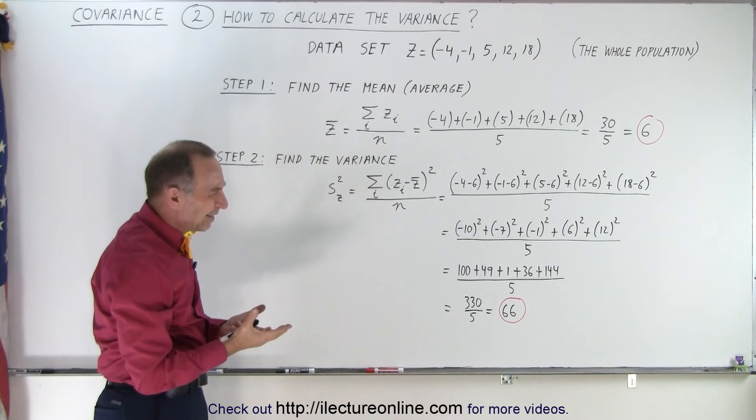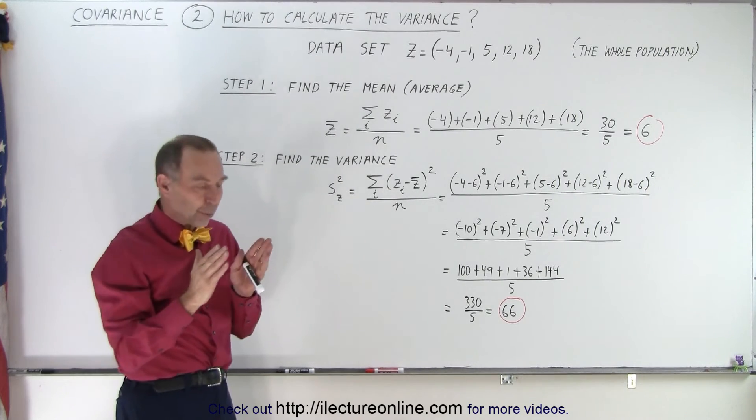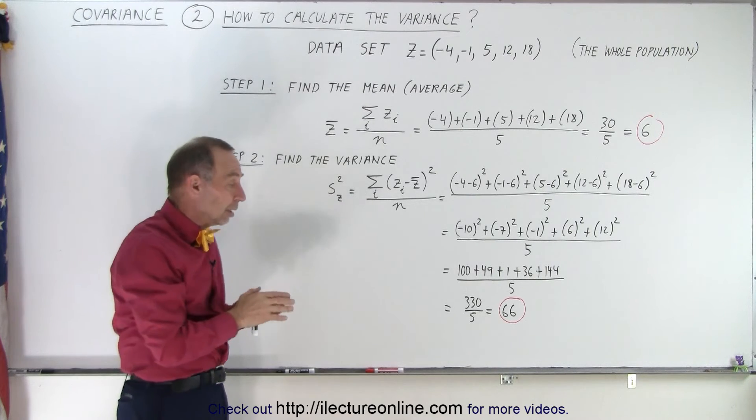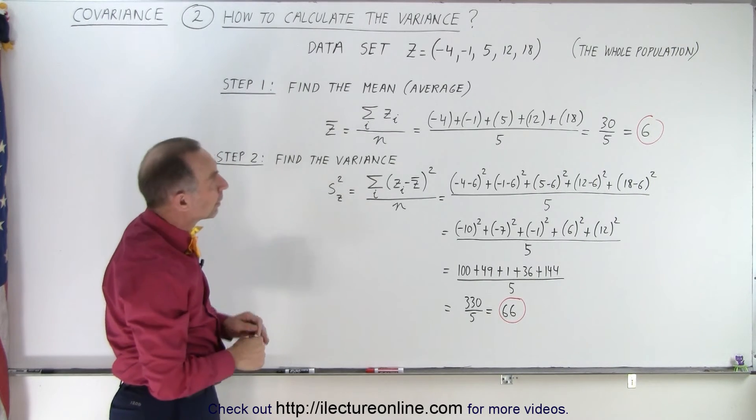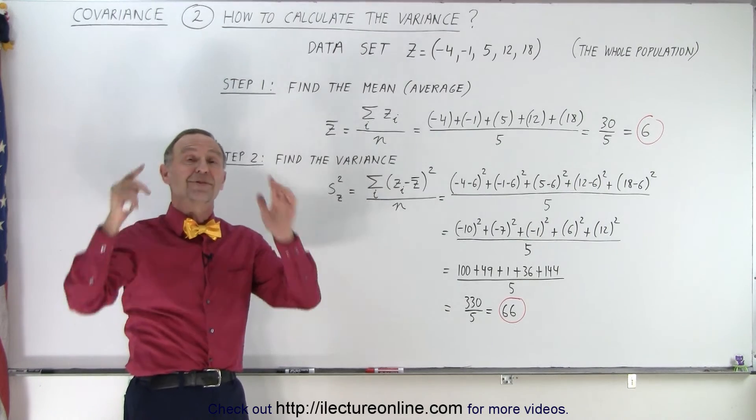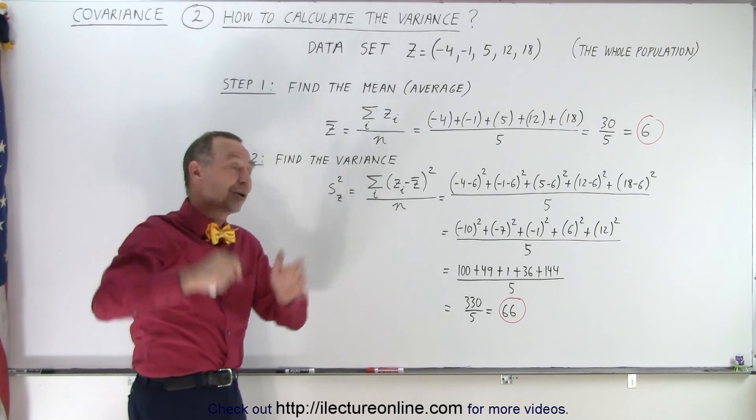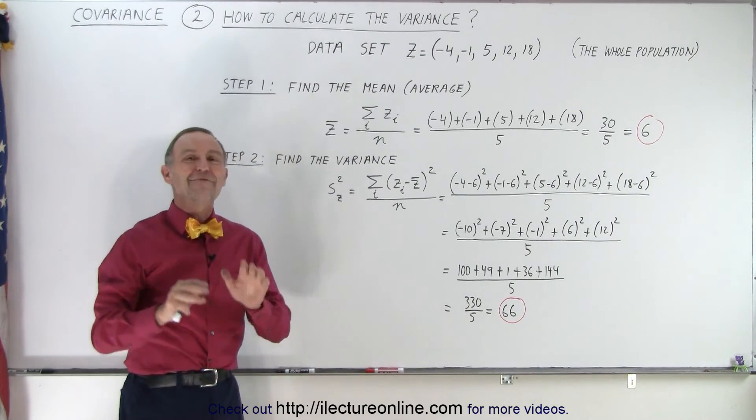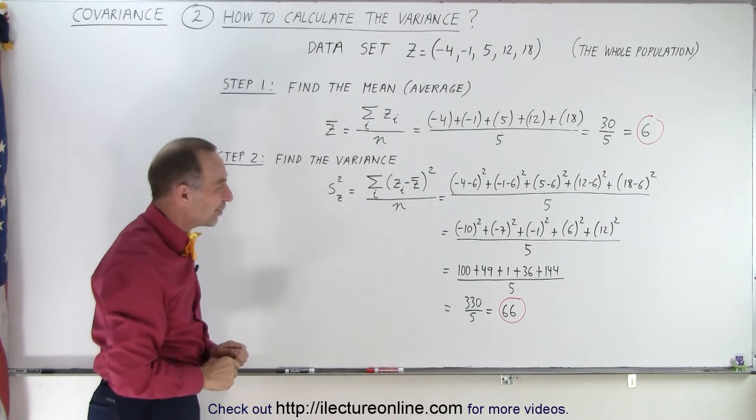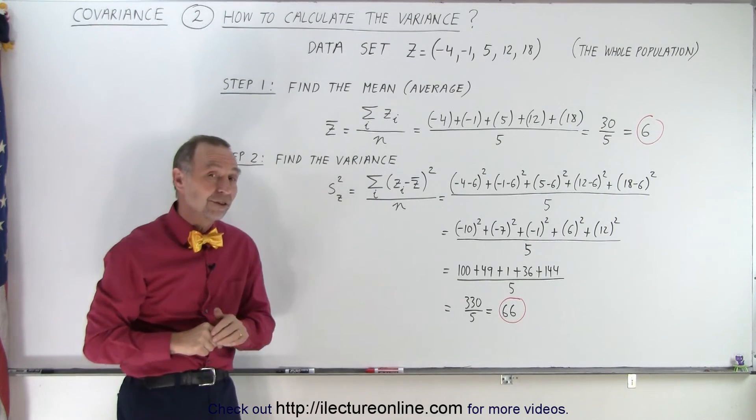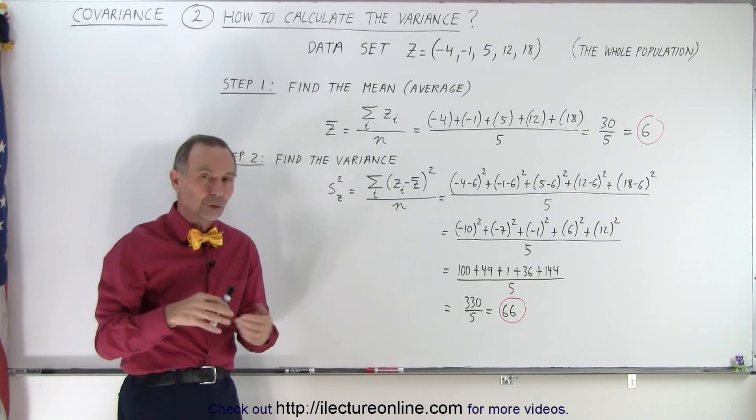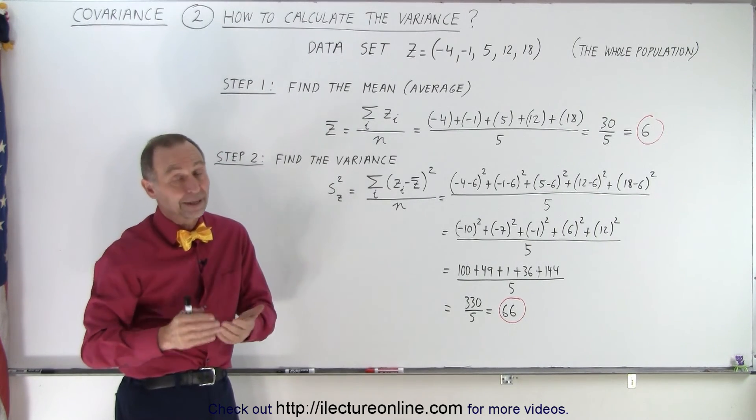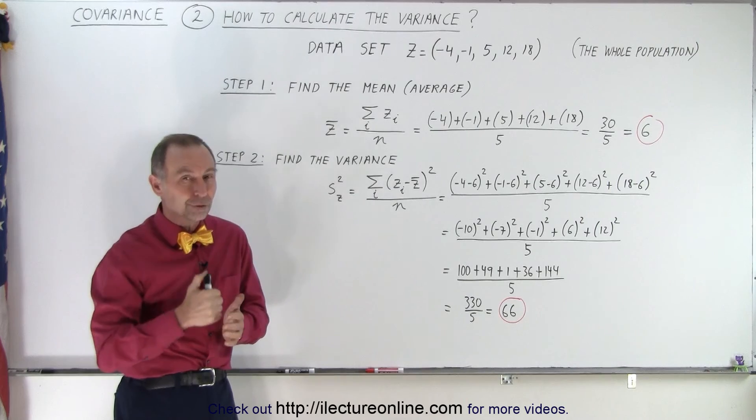But again, what does 66 really mean? I'm getting ahead of myself thinking about correlation and covariance, so we won't go there yet. We simply want to calculate what the variance is, and that's good enough for this video. In the next video, we're going to look at the difference between using the population or using a sample of the population, because that does affect how we calculate the variance and covariance, so stay tuned.